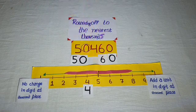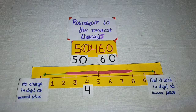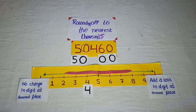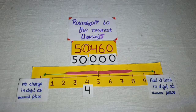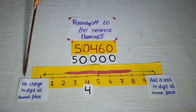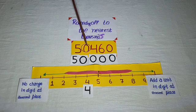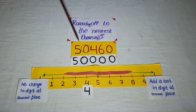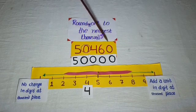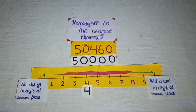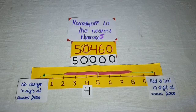Now put digit 0 at the ones place, tens place, and hundredths place. The digit 4 is at the hundredths place, so there is no change in the digit at the thousandths place — it stays the same. The number 50,460 can be rounded to 50,000.